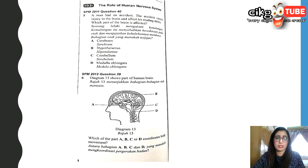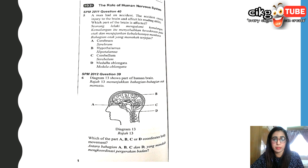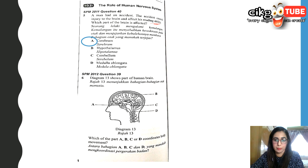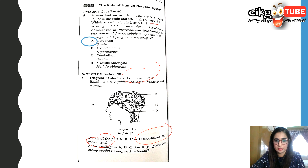Another question: a man had an accident that caused injury to his brain and affected his reading ability. Which part of the brain is affected? Reading ability is related to the cerebrum. And the last question: which part coordinates body movement? Movement and balance are controlled by the cerebellum.